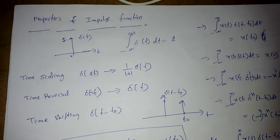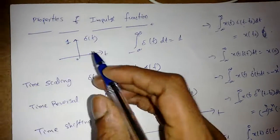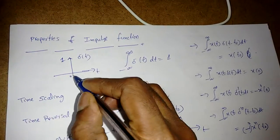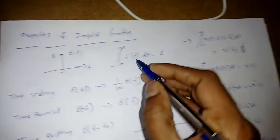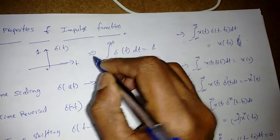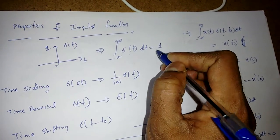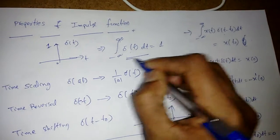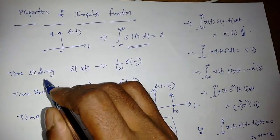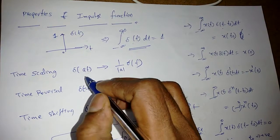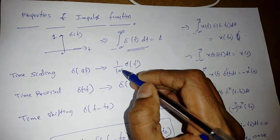In this lecture we are going to see some properties of the impulse function. The impulse signal is defined as: the integral from minus infinity to infinity of delta(t) dt is equal to 1. Now if we scale this delta function, that is delta(at), it will become (1/|a|)·delta(t).